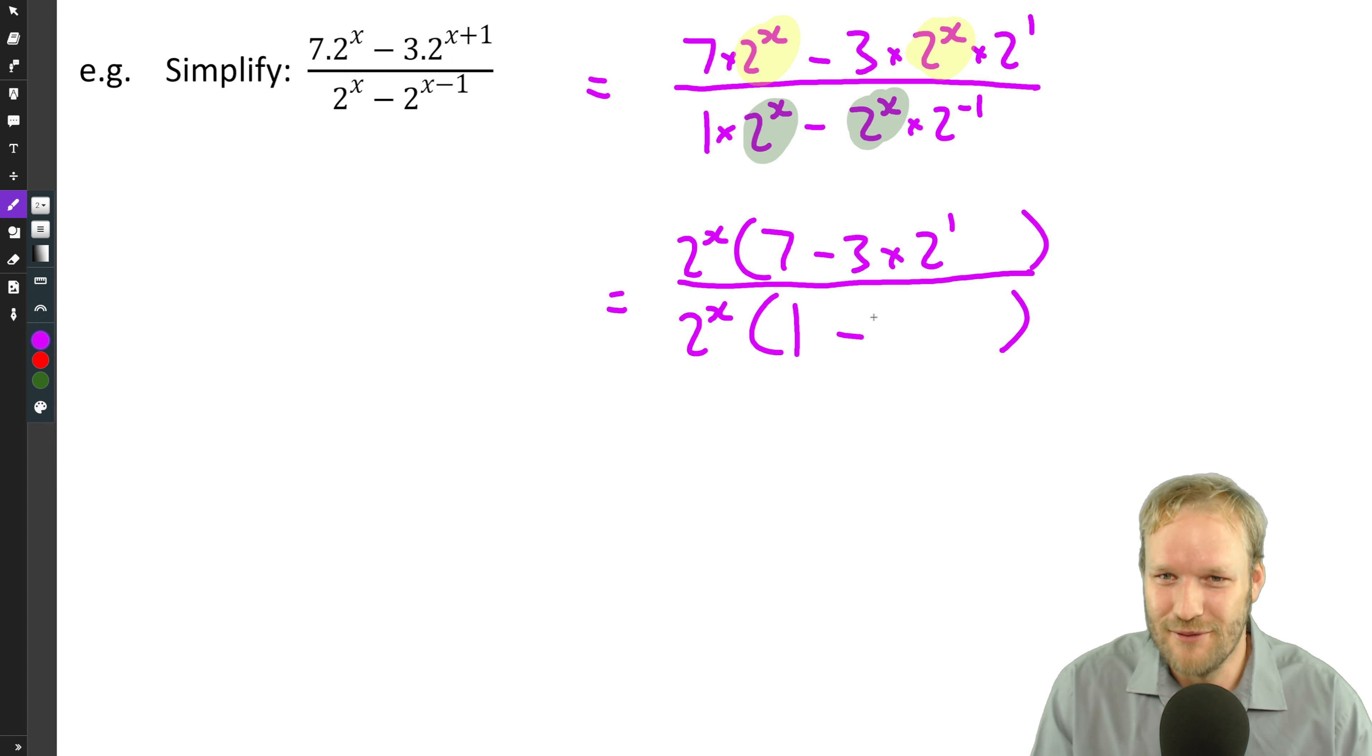Minus. Well, we still need to go two to the minus one. And just, you know, check for interest's sake. If you multiply this two to the x into the bracket, will you get back to the previous step? Well, two to the x times one, that's the first term. And two to the x times minus two to the minus one, well, that's minus two to the x times two to the minus one. Same thing.